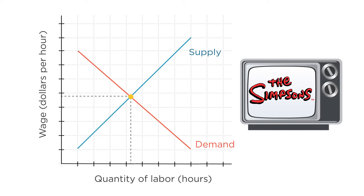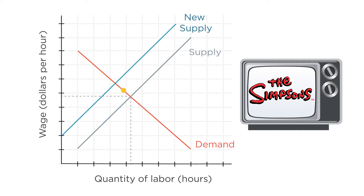But labor supply does change. Workers need more incentive to actually go to work for these firms — firms have to pay a higher wage to pull them away from their TVs. So the supply curve shifts up, and the resulting equilibrium has fewer workers working for a higher wage.